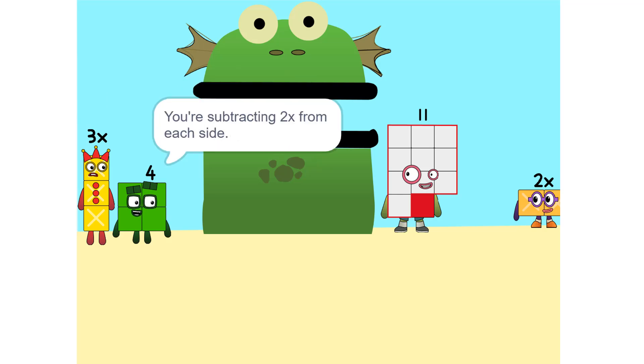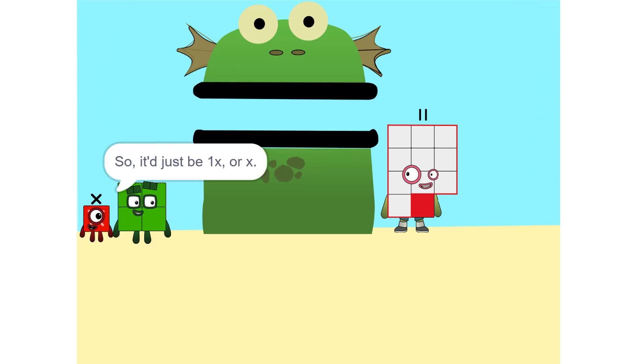Think of it this way. You're subtracting 2x from each side. So it'll just be 1x or x. Correct.